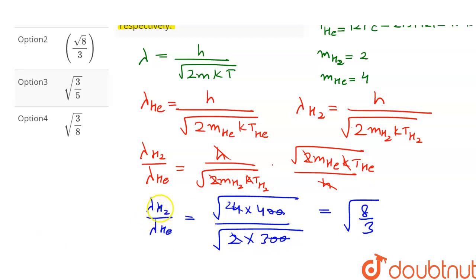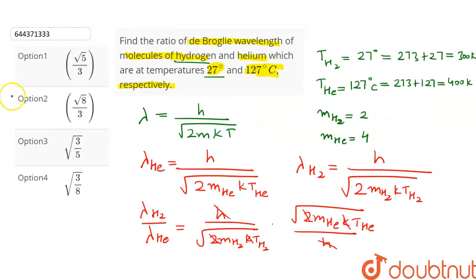So the ratio of wavelength of hydrogen molecule to that of helium molecule is equal to under root of 8 by 3. Now let's check the options. So option number 2 will be the correct answer of this question. There is a typing error. This will be whole under root of 8 by 3.